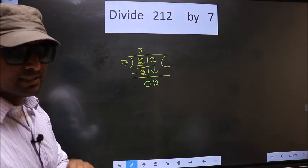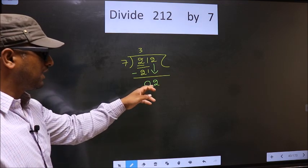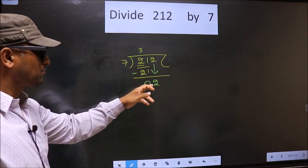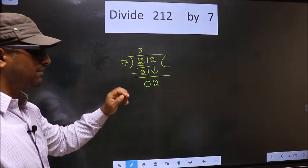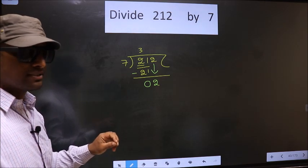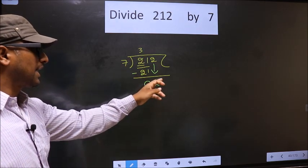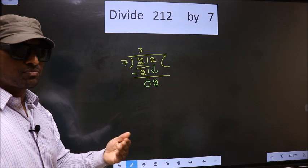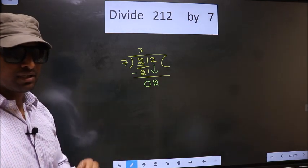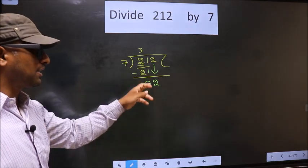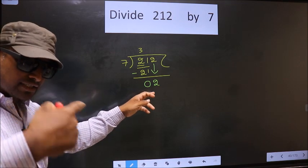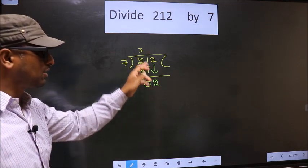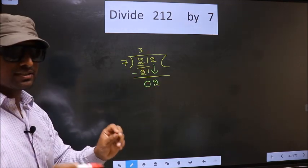And the mistake is this one. Here we have 2, and 7. 2 is smaller than 7. So what many do is they put a dot and take 0 here, which is wrong. Just now you brought the number down, and in the same step you want to put a dot and take 0, which is wrong.